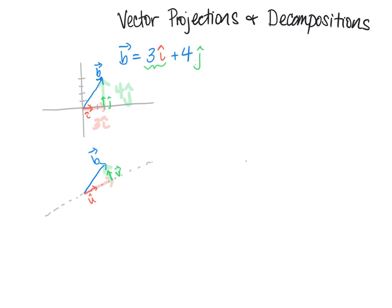Let's find the pink vector first. To come up with a vector I need a magnitude and a direction. I already have the direction, which is just u, so now I need the magnitude of this vector. Here's where we can use what we know from trig. Let's think of this angle theta as being in between the vectors. Using this angle, what trig function can I use? What length do I know? I know this length right here.